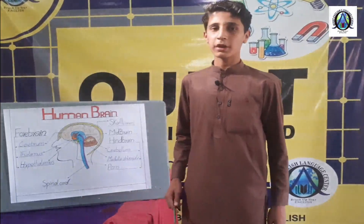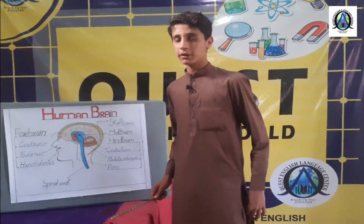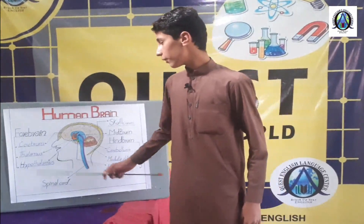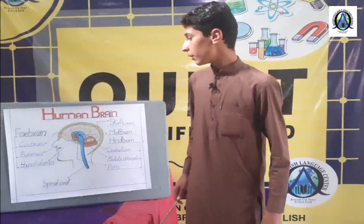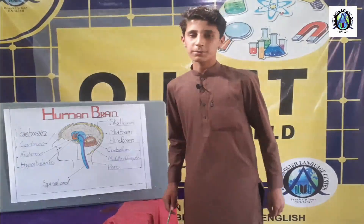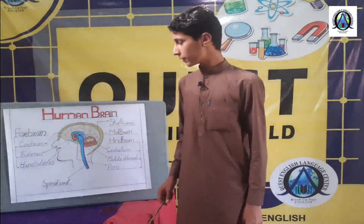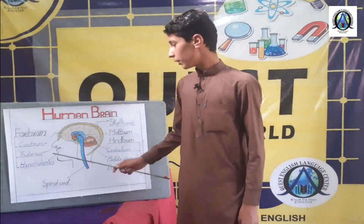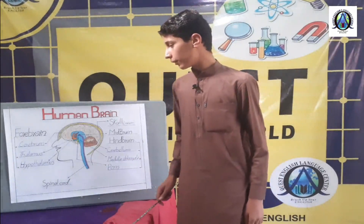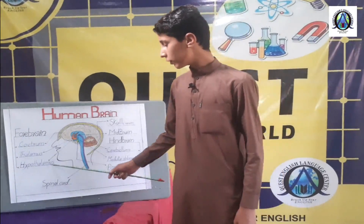Cerebral controls functions like sight, hearing, speech and thinking and decision making. And the second one is thalamus. Thalamus is the smallest part present inside the cerebrum that controls a number of sensory functions. And last, hypothalamus.